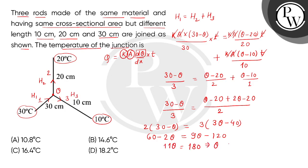तो θ = 180/11 ≈ 16.4°C. This is the temperature of the junction. So the correct answer will be option number C. Thank you.